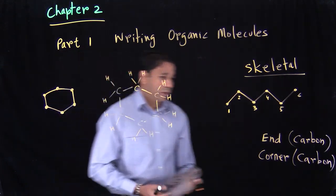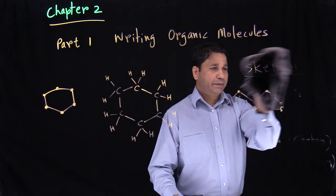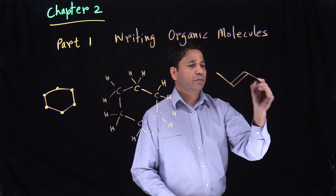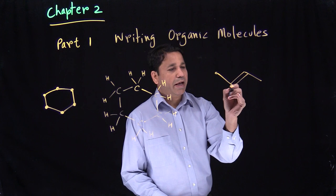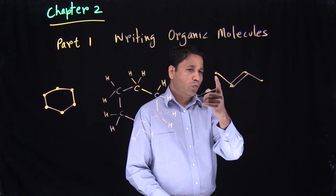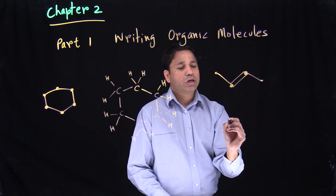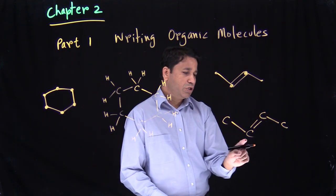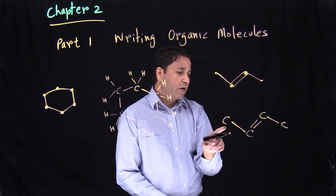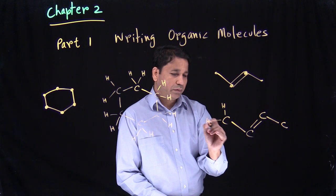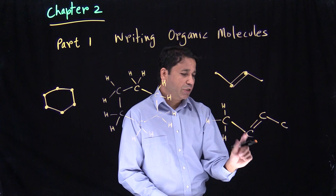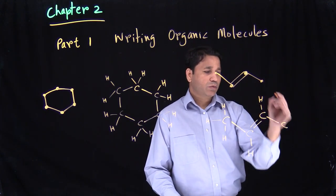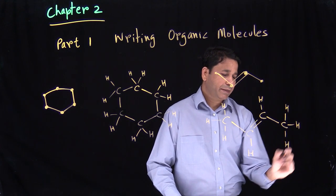Let's try another example with a double bond — say when you have a double bond between carbon and carbon. Each corner and each end is a carbon, so we have one, two, three, and four carbons. This first carbon has only one bond, so there will be three hydrogens. The next carbon has three bonds — there should be one hydrogen. The carbon on the other side of the double bond is the same: three bonds means one hydrogen. And the last carbon has one bond, so there should be three hydrogens.